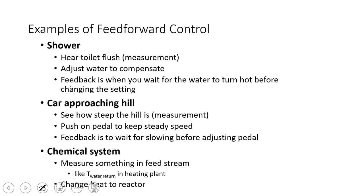Examples of feed-forward control: we might have a shower. We're taking a shower and all of a sudden we hear the toilet flush, and we know that the cold water pressure is going to go down, so it's going to be hot, and we might jump out of the way. That's an example of when we would apply feed-forward control — we hear a disturbance happening and we understand that something's going to change in our temperature.